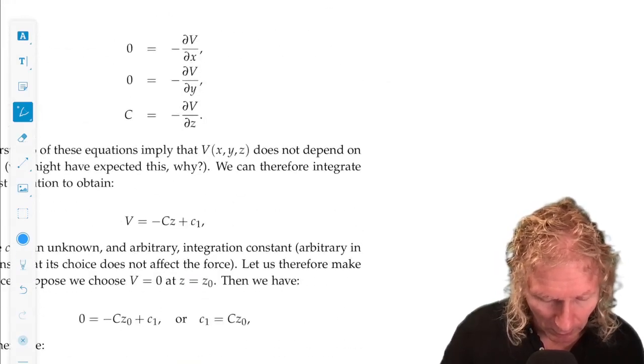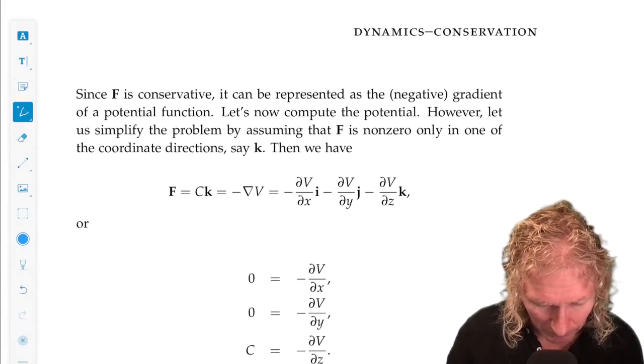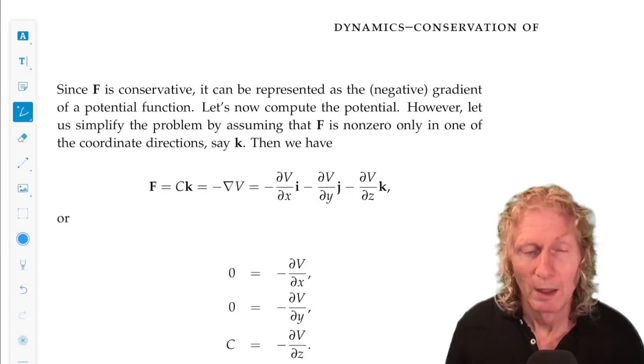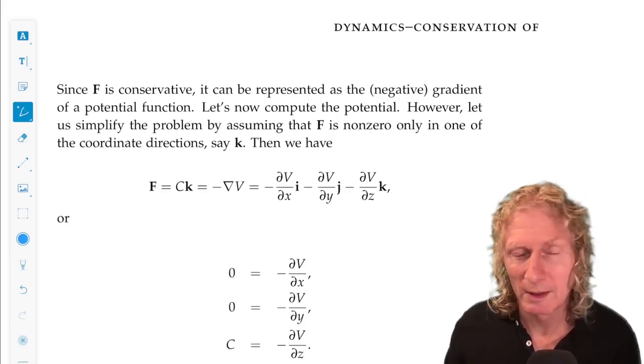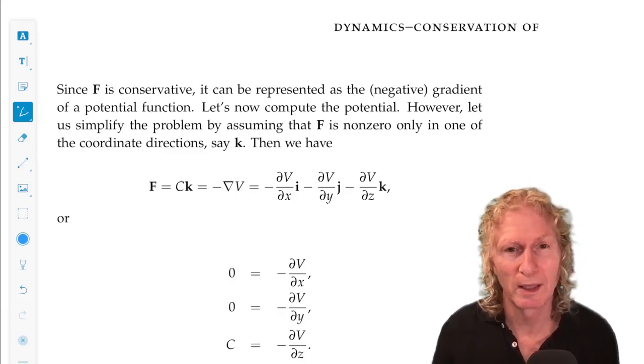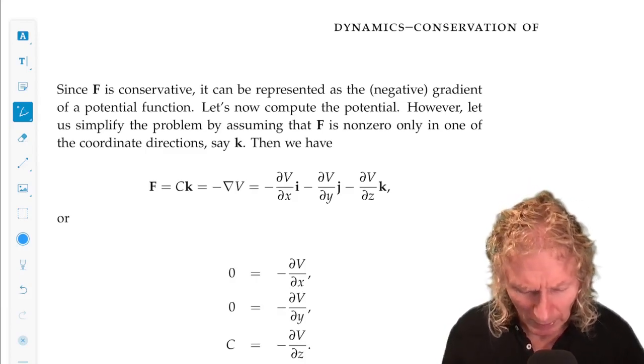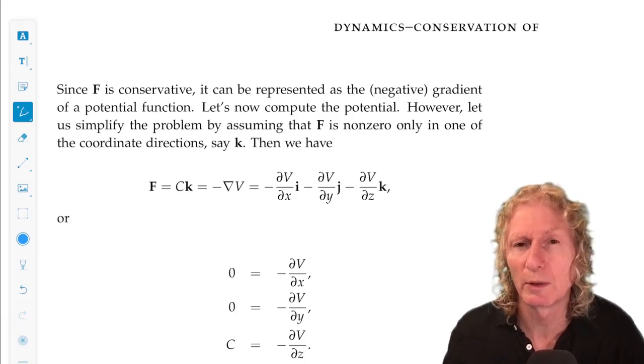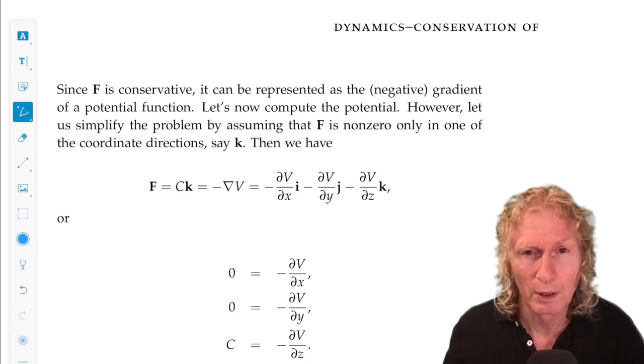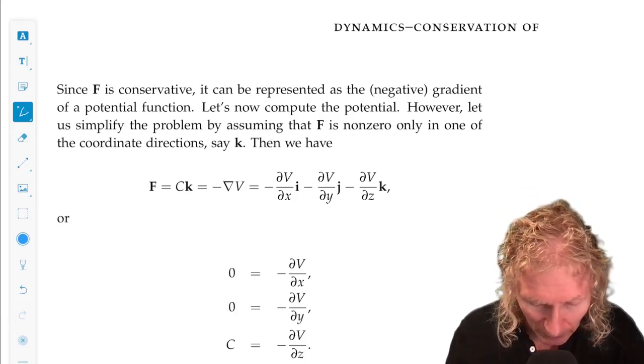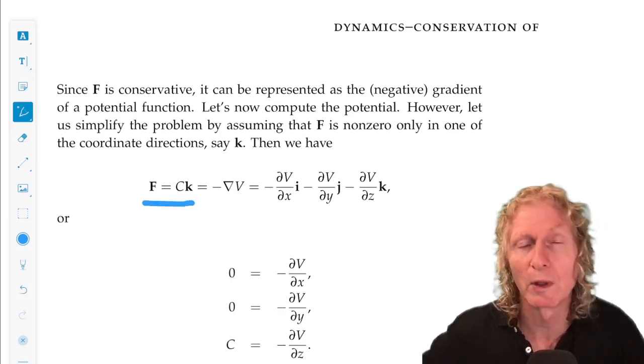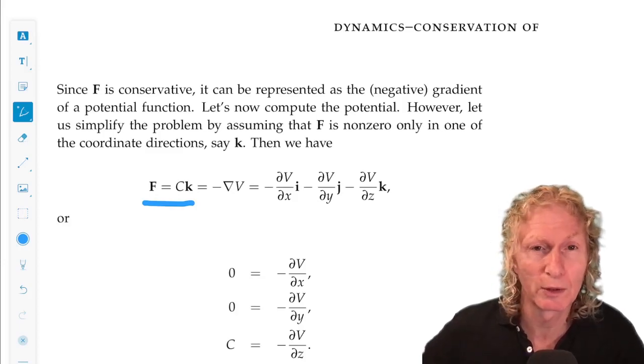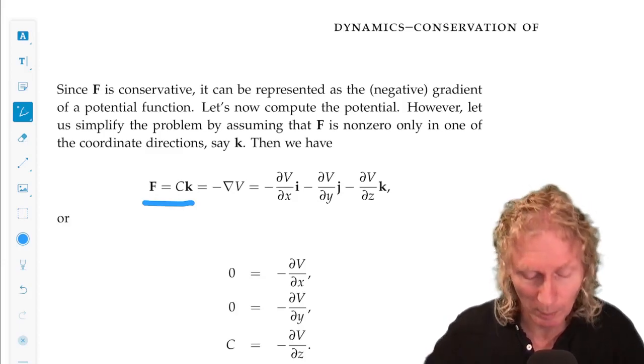I want to look at a particular example. When we show it's conservative, we don't get the potential from that calculation. We have to do something different. So now I want to find the potential energy function for a constant force. And I'm going to simplify this to the situation where the force only has a component in one direction, the K direction. We'll call it CK from our previous.